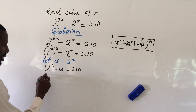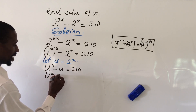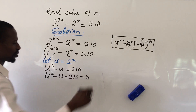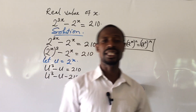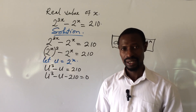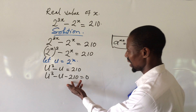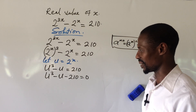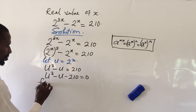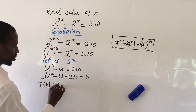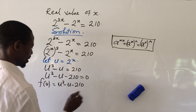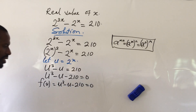The equation now becomes u to the power of 3 minus u equals 210. Moving everything to the left-hand side, we have u cubed minus u minus 210 equals 0. This is a polynomial equation, so we define f(u) equals u cubed minus u minus 210, and set it equal to zero.